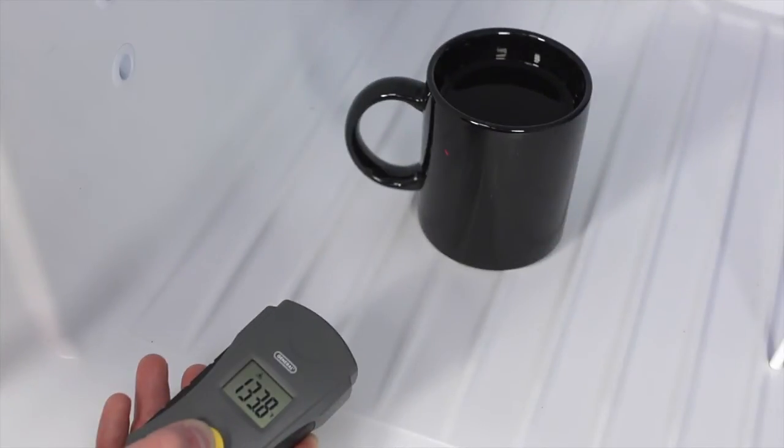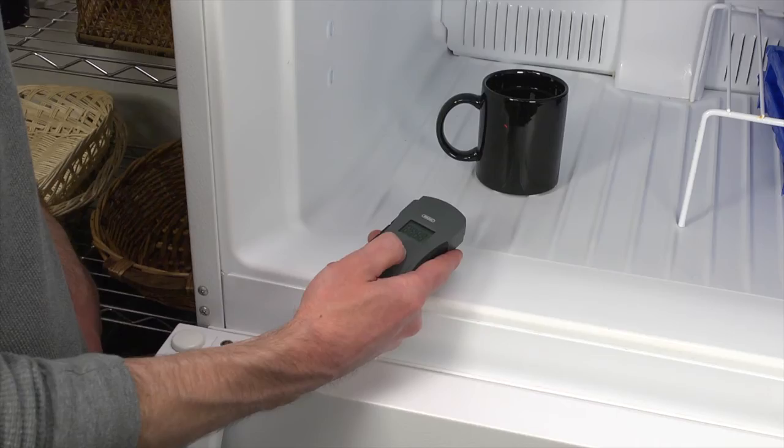Next, put the cup into the freezer and measure again. Hold the unit close to the cup and observe what happens when the measurement overlaps the target area.